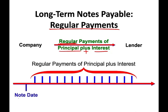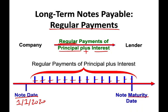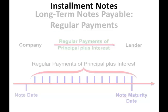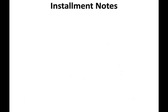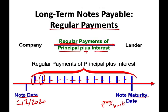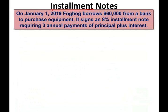Here's how it looks: the date the note was issued — let's assume 1-1-2020 — then every year or every month you will be making a payment. We have a series of payments until the note matures and you pay back the whole note. This is called an installment note. For example, on January 1st, FogHog borrows $60,000 from a bank to purchase equipment and signs an 8% installment note requiring three annual payments of principal plus interest.